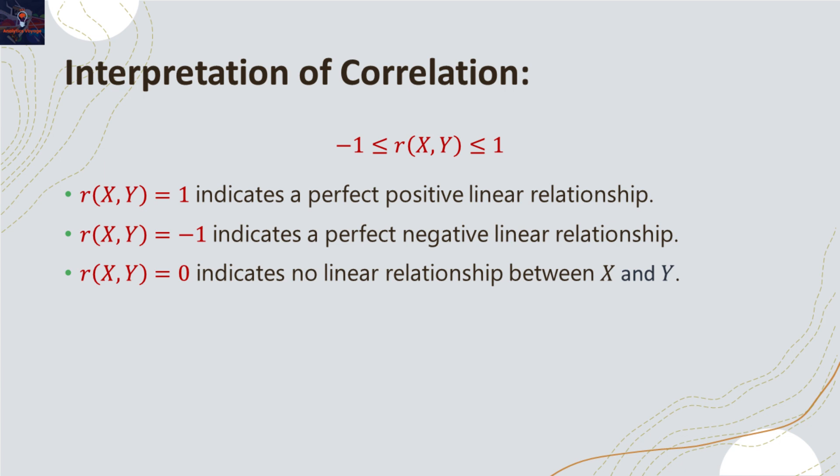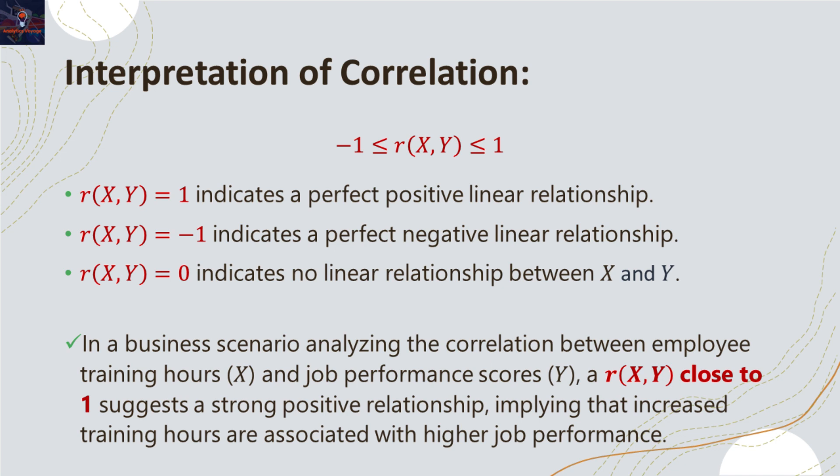Similar to covariance, correlation value of 0 indicates that there is simply no linear relationship between the variables. As an example, let's consider correlation between employee training hours and job performance scores.